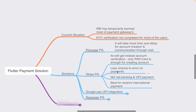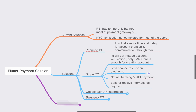The problem with Stripe is that net banking and UPI payments are currently not available, but they will come in the future. It is the best option for receiving international payments — big companies like ChatGPT use Stripe for their payment processing.